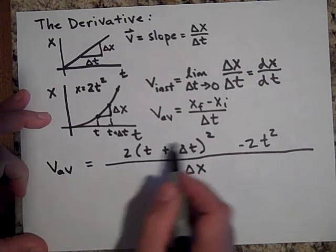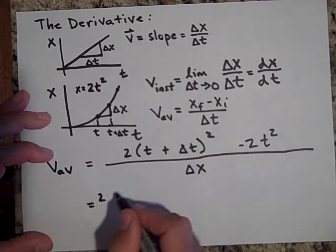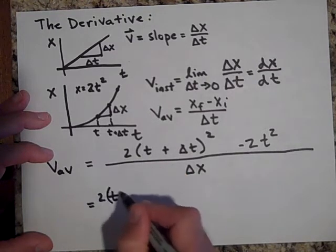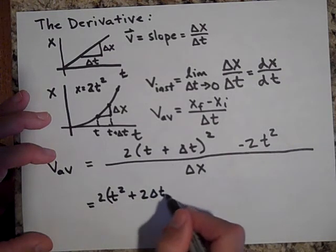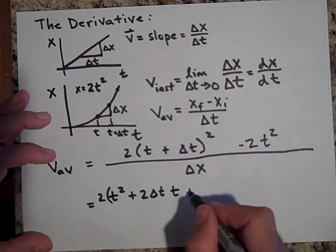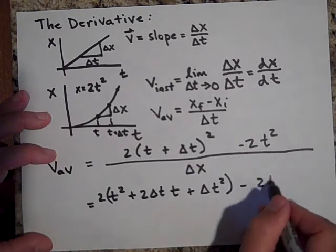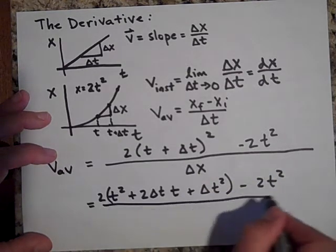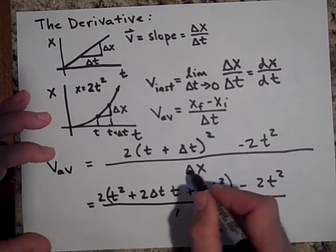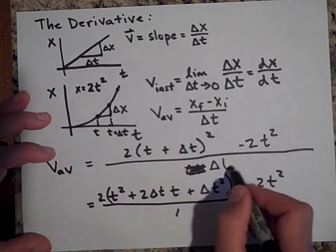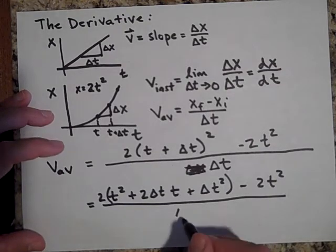Okay, let's expand this out. Let's expand that out. So if I expand that out, that's going to give me 2. And this is going to be t squared plus 2 delta t times t plus delta t squared minus 2t squared. All that over delta x. Oh, I'm sorry. This is not delta x. This is delta t. Hey, did you catch that? I hope so. Alright, so this is going to be delta t.